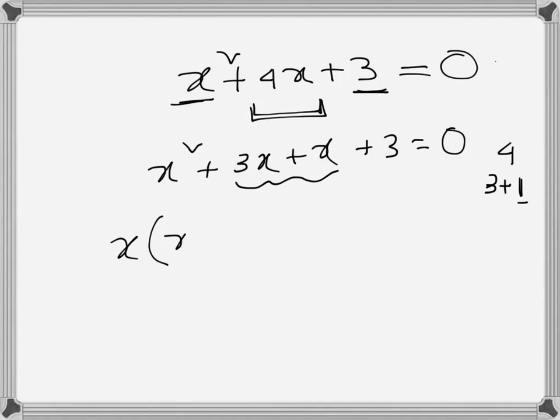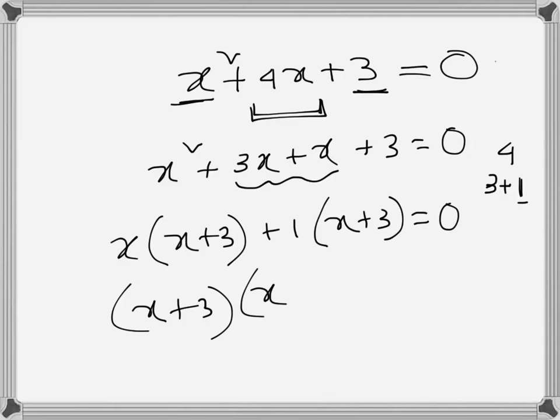So now we can factorize: x plus 3, x plus 1, x plus 3 is equal to zero. So we have this one, we have factorized the left hand side and the solutions are either x plus 3 is equal to zero.